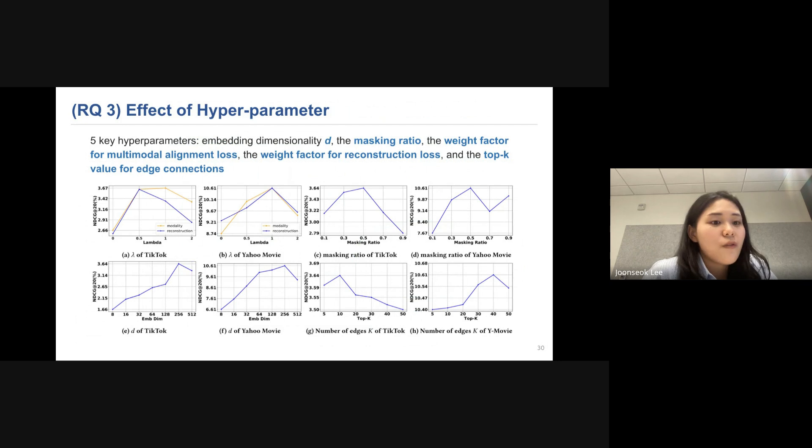And this is the effect of the hyperparameters. And I tested on five key hyperparameters, which are embedding dimensionality D, masking ratio, the weight factor for multimodal alignment loss, the weight factor for reconstruction loss, and the top K value for edge connection. And the detailed test results are shown below.